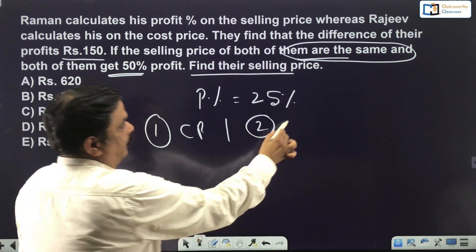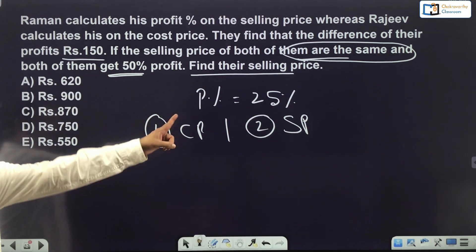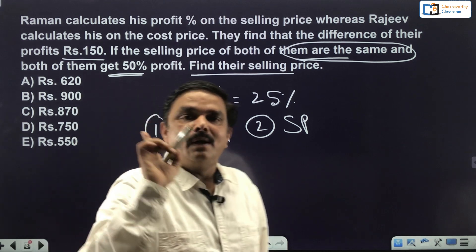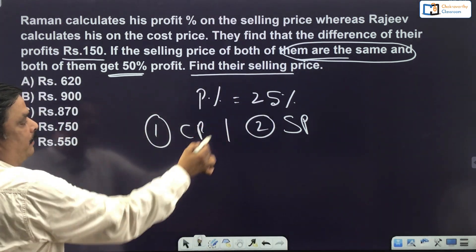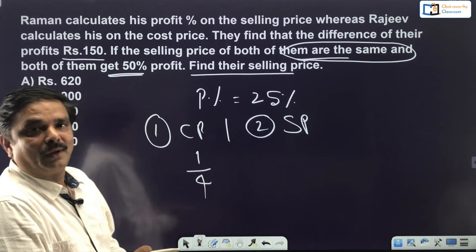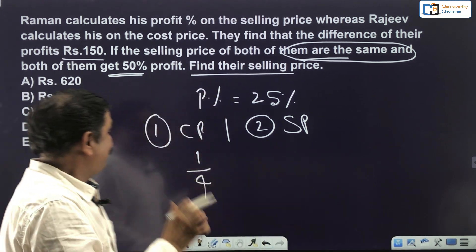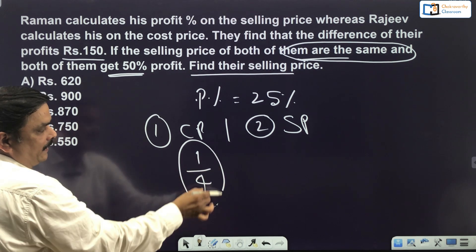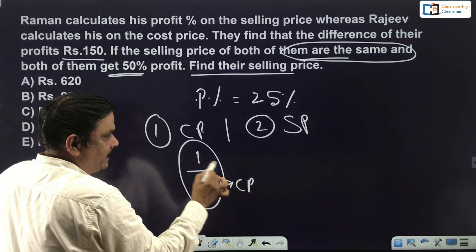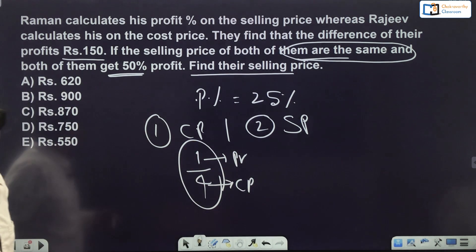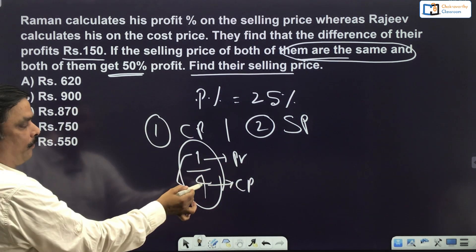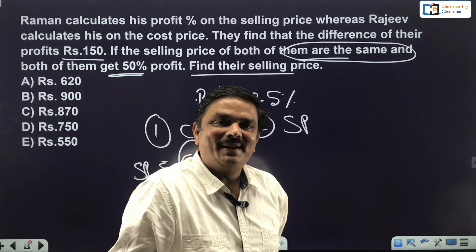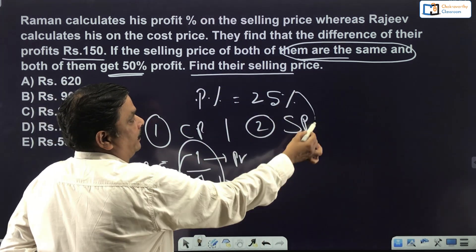When profit is calculated on cost price, 25% is 1/4. Here 4 is the cost price and 1 is the profit, so selling price is 4 + 1 = 5. Normal method. Whereas when profit is calculated on selling price, 25% is still 1/4, but now 4 is the selling price and 1 is the profit.